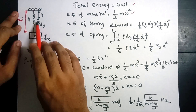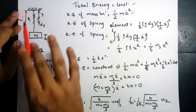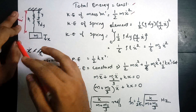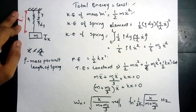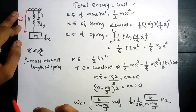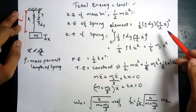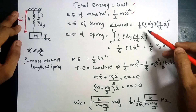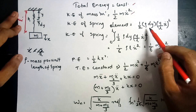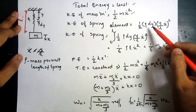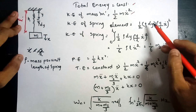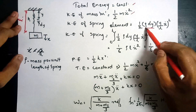We consider an element at a distance y from the support. This element of kinetic energy is considered and integrated to get the total kinetic energy of the spring. The mass per unit length of the spring is rho. The kinetic energy of the spring element — that smaller spring element — has mass per unit length rho and length dy, so the elemental mass is rho times dy.